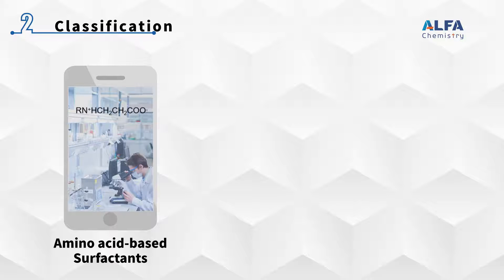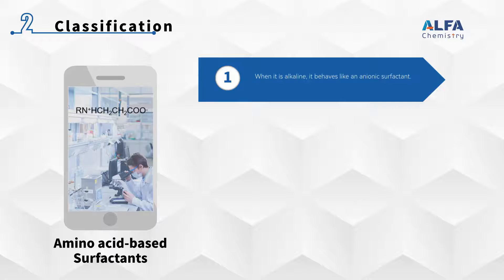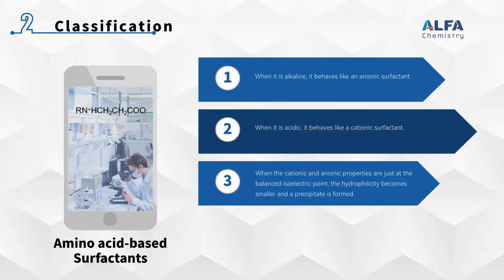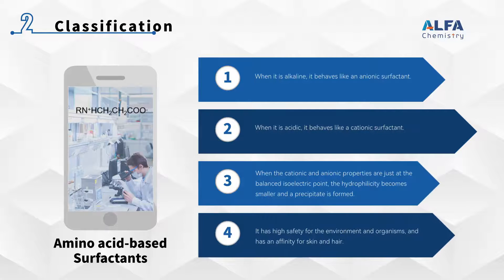The aqueous solution of amino acid-type amphoteric surfactant is alkaline. If hydrochloric acid is added slowly while stirring, there is no change when it becomes neutral. When it is slightly acidic, a precipitate is formed. If hydrochloric acid is added to make it strongly acidic, the precipitate dissolves again. This means that when it is alkaline, it behaves like an anionic surfactant, and when it is acidic, it behaves like a cationic surfactant. However, when the cationic and anionic properties are just at the balanced isoelectric point, the hydrophilicity becomes smaller and a precipitate is formed. It has high safety for the environment and organisms, and has an affinity for skin and hair, making cosmetics with high safety requirements its best application prospect.